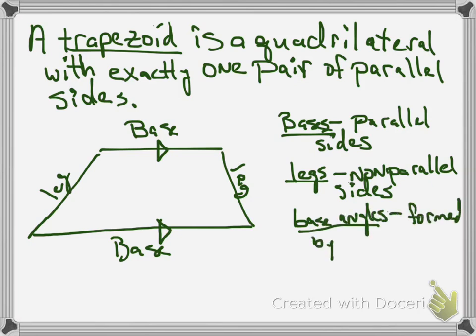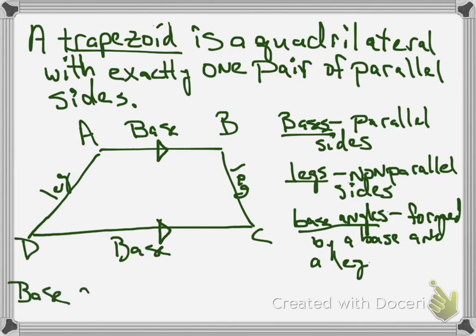But we like to pair them up. So, like, the top base would have, in this case I'm saying the top base, would have some base angles of its own. Let's say here, A and B. And the bottom side, bottom base, would have also angles of its own, C and D.